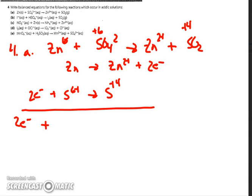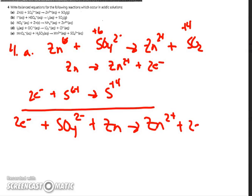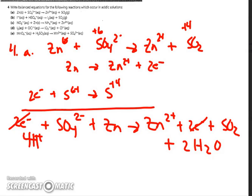I have two electrons plus S 6+, and I can put my oxygen back in and write the ion SO4 2-, then Zn, and on the other side Zn 2+, two more electrons, and just the SO2 group. The two electrons cancel out. Because it's in acidic solution, I look for which side needs water or oxygen — I add two waters to make up for the two missing oxygen. That side then needs four hydrogen, giving the balanced equation: 4H+ plus SO4 2- plus Zn yields Zn 2+ plus SO2 plus 2H2O.